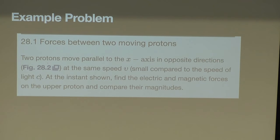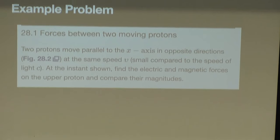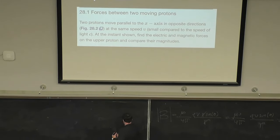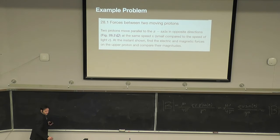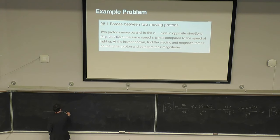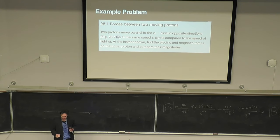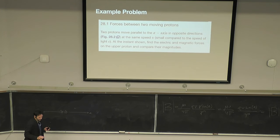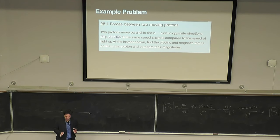Two protons move parallel to the x-axis in opposite directions at the same speed V — and when they say speed, they mean the magnitude, not the velocity vector. The speed is small compared to the speed of light. At the instant shown, find the electric and magnetic forces on the upper proton and compare their magnitudes.